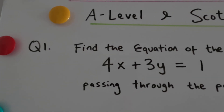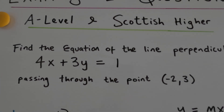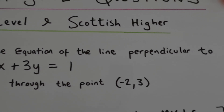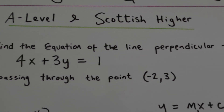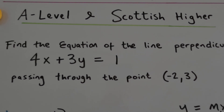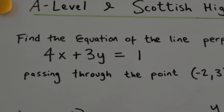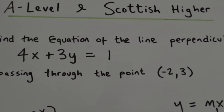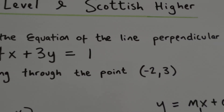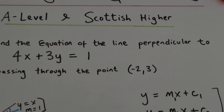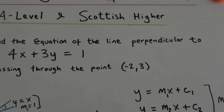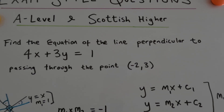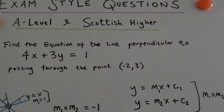Question number one: find the equation of the line perpendicular to 4x plus 3y equals 1, passing through the point minus 2, 3. And this is worth three marks on an exam — not a lot of marks.